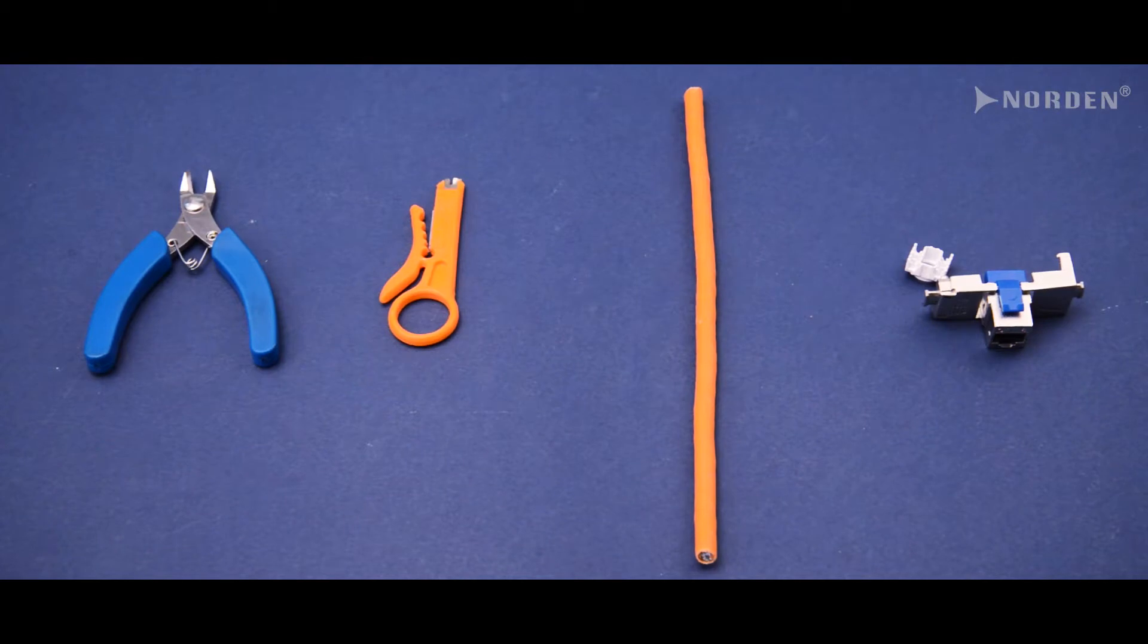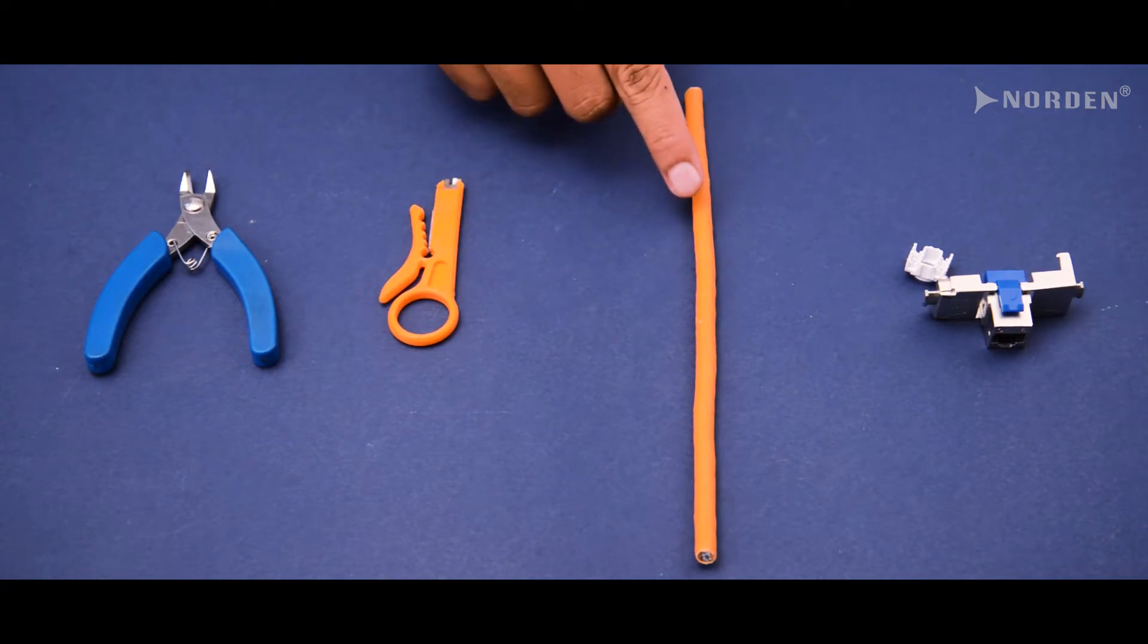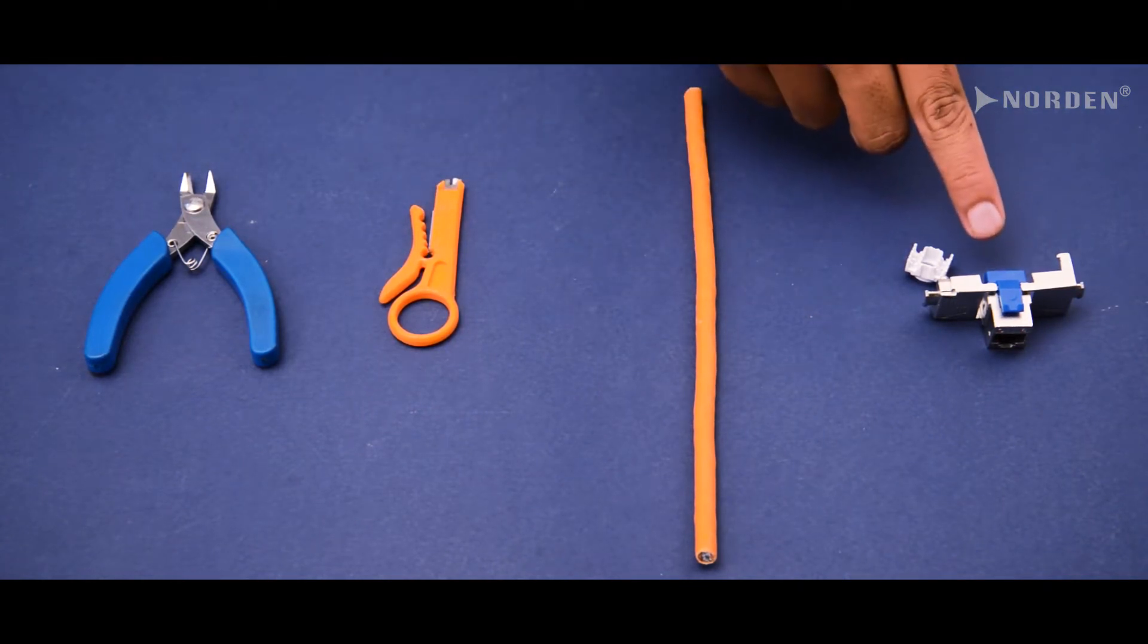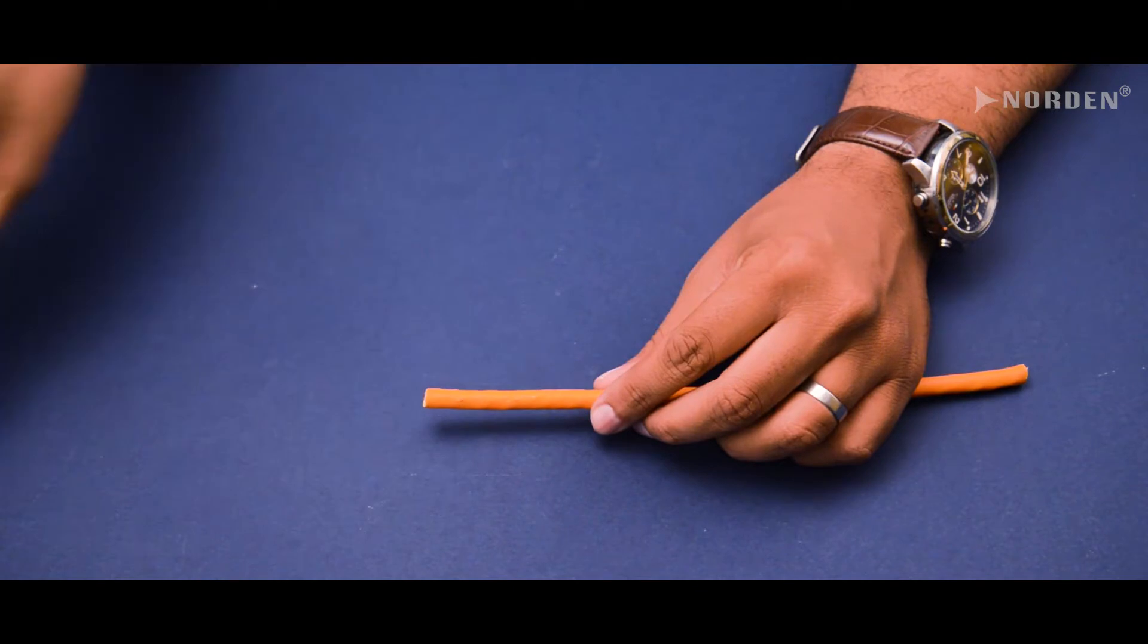The components required for the termination are a cable cutter, a cable jacket stripper, Norden's Category 8 shielded cable, and a Norden Category 8 shielded toolless keystone jack. Now let's start.